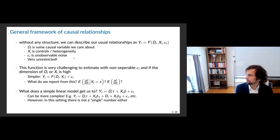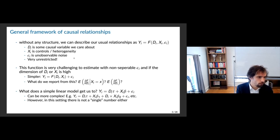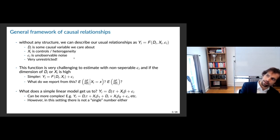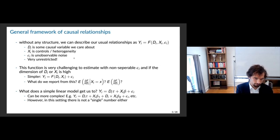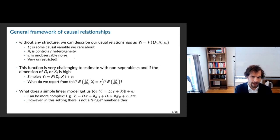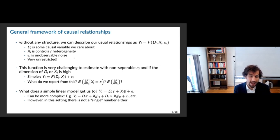Above and beyond the problem of estimating this — it's very challenging when you don't allow the error term to be additive, allowing for a fully flexible formulation — this is hard to estimate. More importantly in my mind, it's hard to report. There's a lot of work that estimates a very flexible functional form, allows for really unrestricted heterogeneity, and then the question becomes: what's the summary takeaway? As researchers, what we'd like to know are simple comparative statics or interesting causal effects that matter.